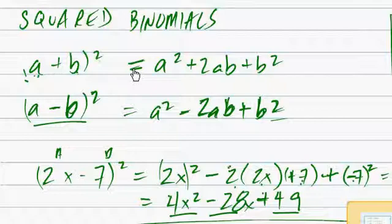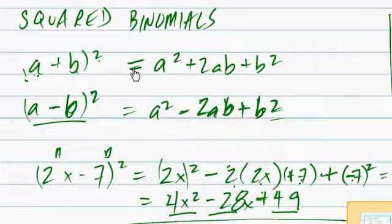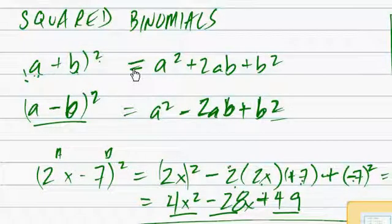We'll work more on these squared binomials. Again, the formulas are (a+b). If you have a positive binomial, a squared binomial would be (a+b)². And this is how you find the product, a²+2ab+b². If you have the difference of squared binomial, the product would be a²-2ab+b².